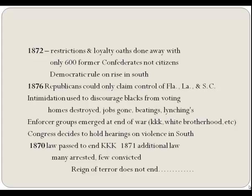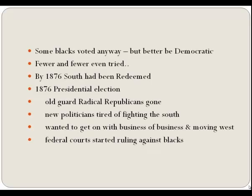Some states did attempt to stem the violence and laws were passed, but no law is any good if it's not enforced. So Congress investigated and then passed laws to prevent anyone from being prevented from voting for any reason. In 1871 they passed a law to end the KKK, and the next year reinforced that law. There were a lot of arrests made but very few convictions. The reign of terror did not end—even the Republican Party had to be dissolved in several areas because of threats of violence and actual killings. But some Blacks voted anyway, defiantly, though they became increasingly rare. If they did vote, they had better let it be known they voted Democratic.